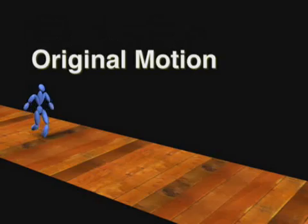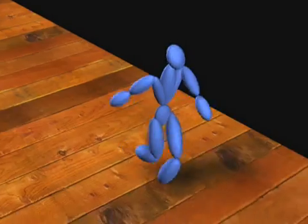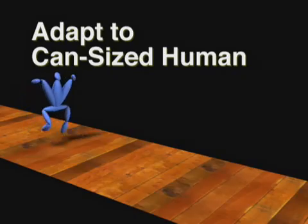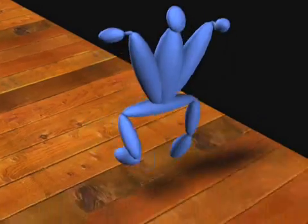Finally, we consider adapting a human skipping motion to a rigid can. First, we adapt the motion to a human with the proportions of the can.